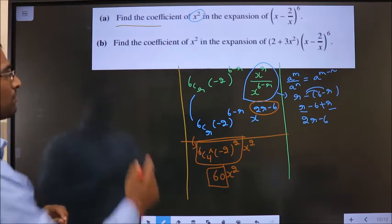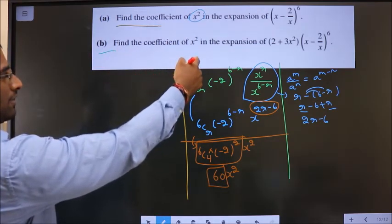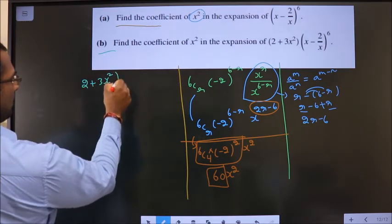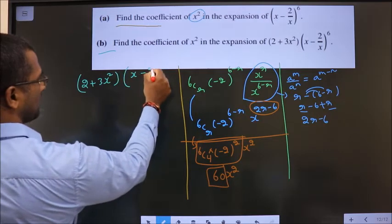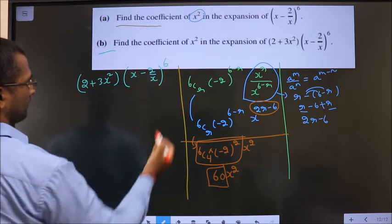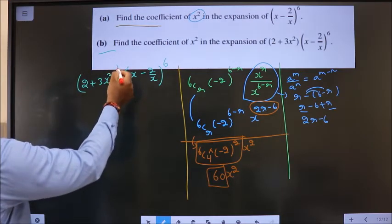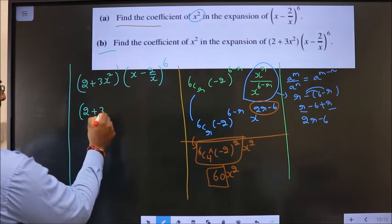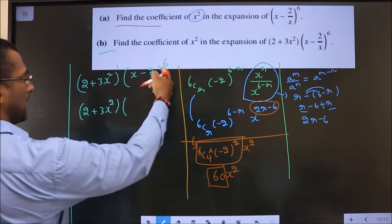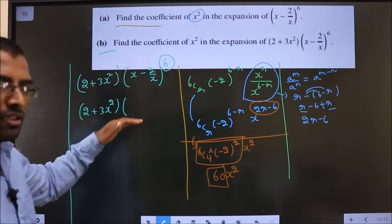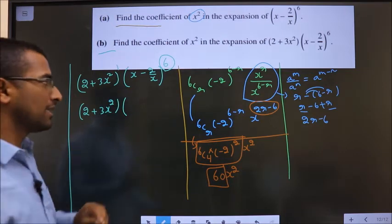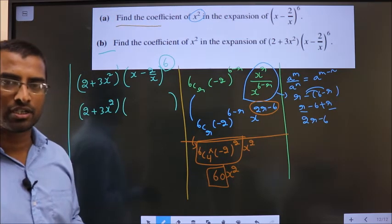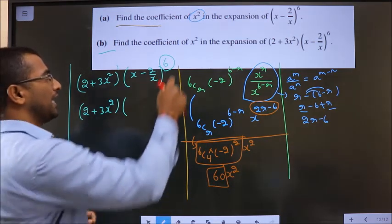B1 now. Find the coefficient of x square in the expansion of (2 plus 3x square) times (x minus 2 by x) power 6. Now, this bracket has got power 1, so it will not undergo any change. This bracket has got power 6. So, if I expand this bracket, I get many terms. I should not find and write all the terms.